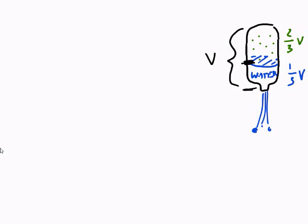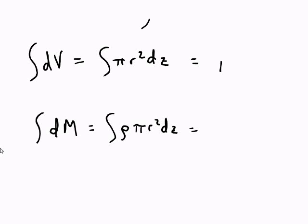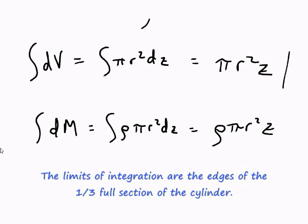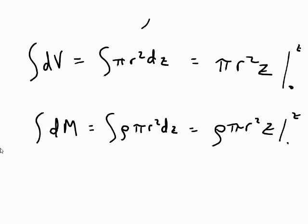Let's take this a step further and get our actual limits and our actual solutions to those integrals. For volume over the volume limits, we get pi r squared z as a solution to the integral going from zero to z. Likewise for M, the integral dM we get rho pi r squared z over that same limit.